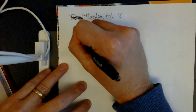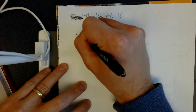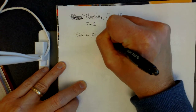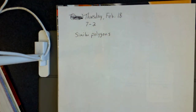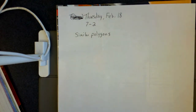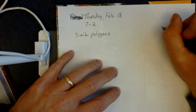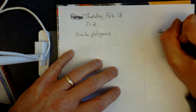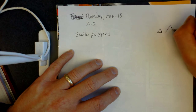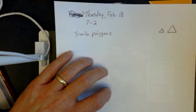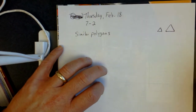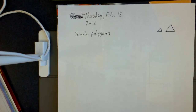Let's start off with similar polygons. Similar polygons are polygons that have the same shape but they don't necessarily have to be the same size. One could be bigger than the other — they could be the same size, but typically one is bigger than the other. You can think of it like having a little triangle and taking it to a copy machine and blowing it up to make it bigger. Those would be similar figures — same shape but different sizes.